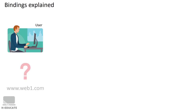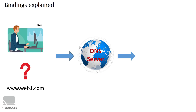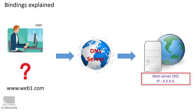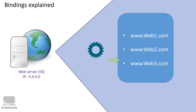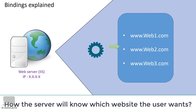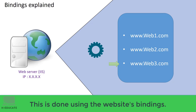Let's consider a user requesting www.web1.com. The worldwide DNS servers get the request and route it to the appropriate server using the server's IP address. Now inside this web server we may have multiple websites hosted — so how does the server know which website the user is requesting? This is done using website bindings — here is where bindings play their role.